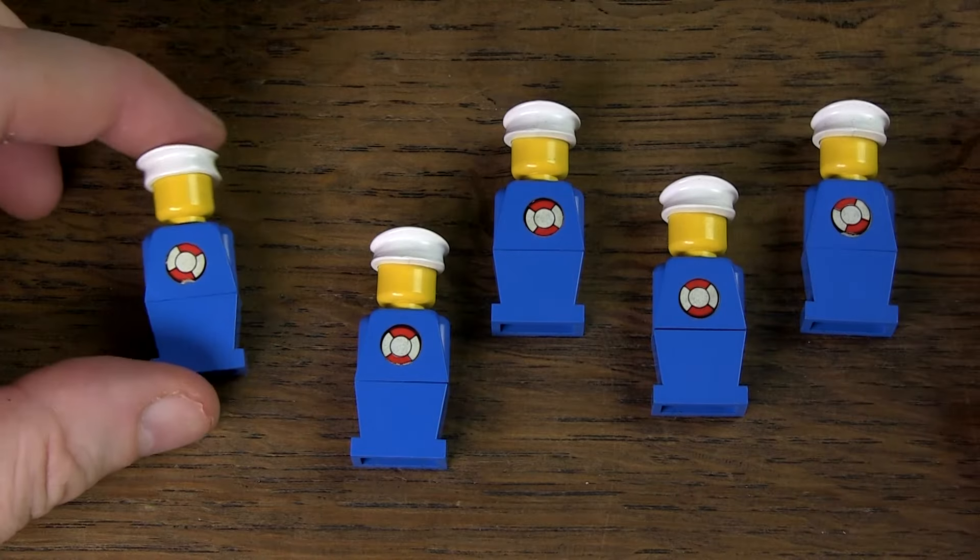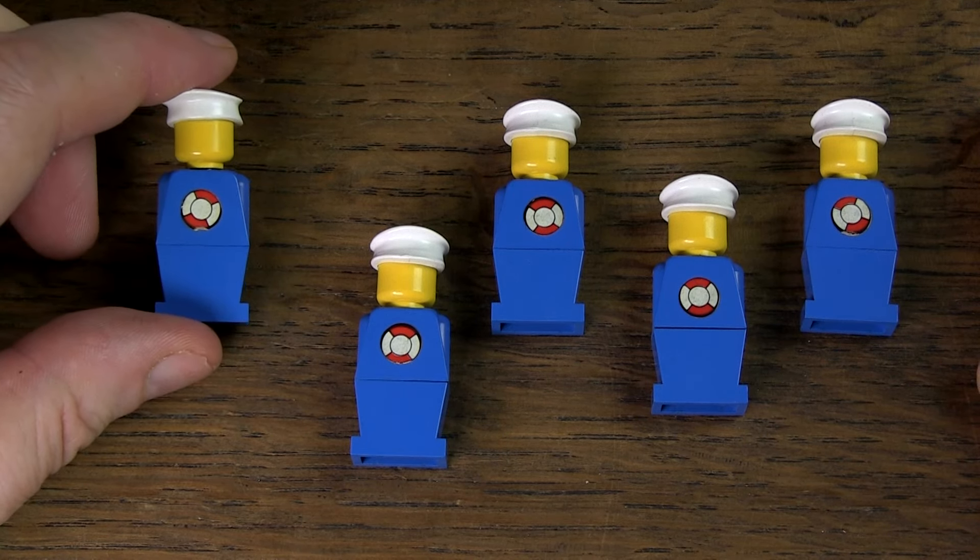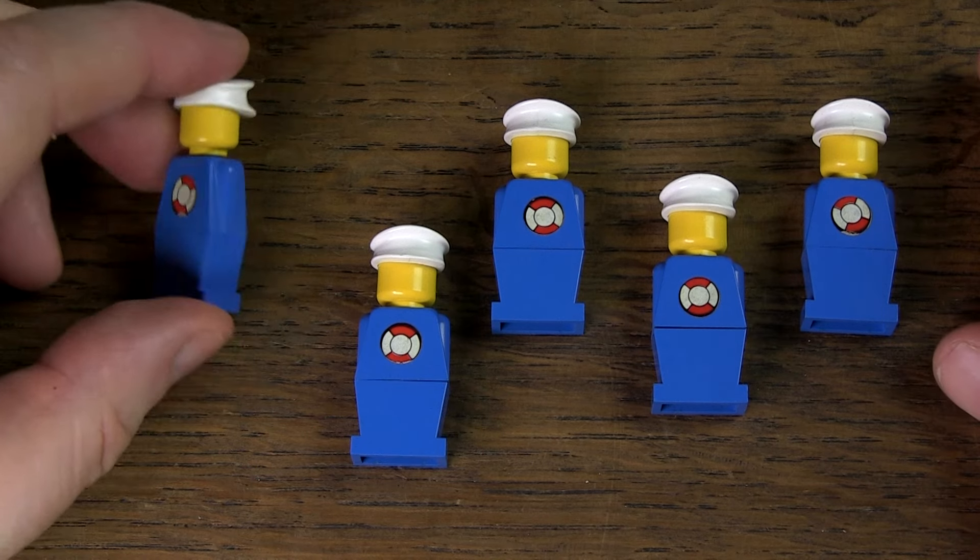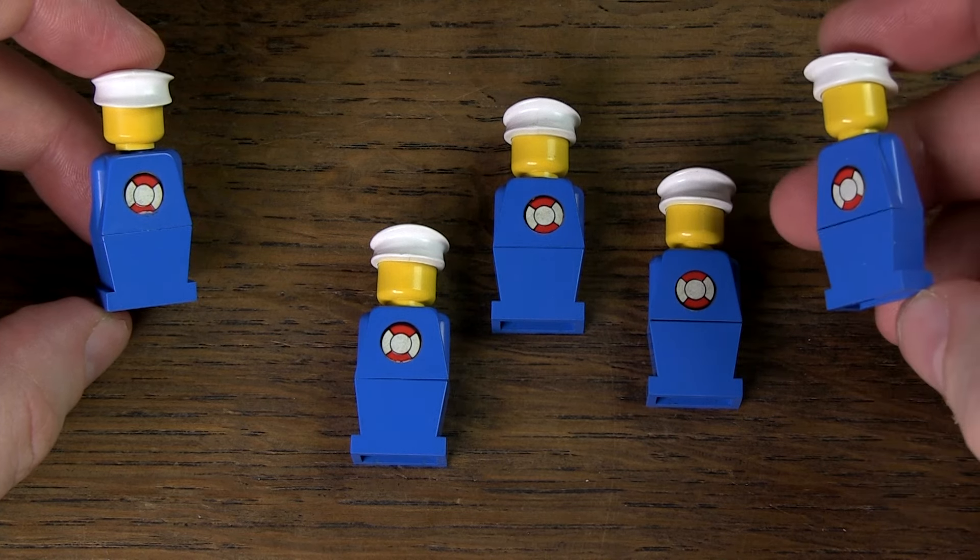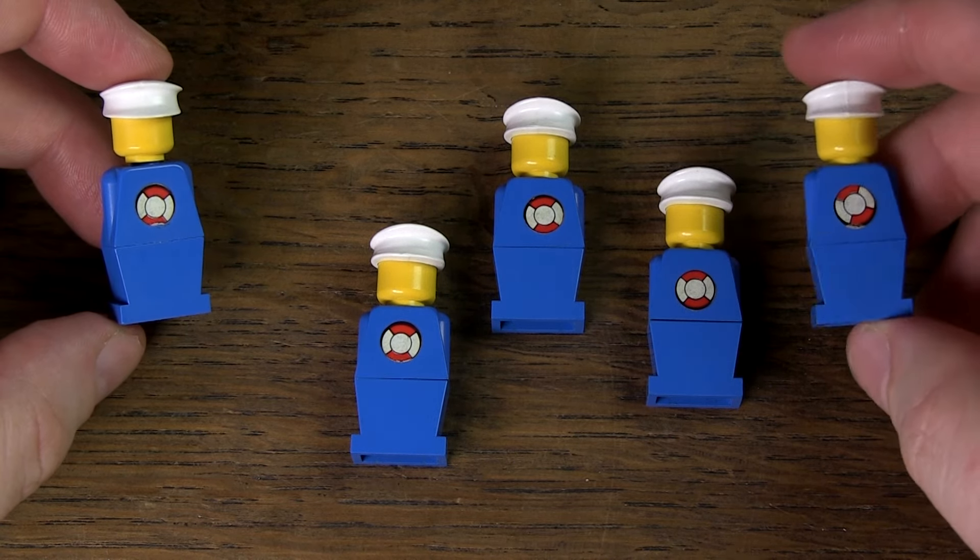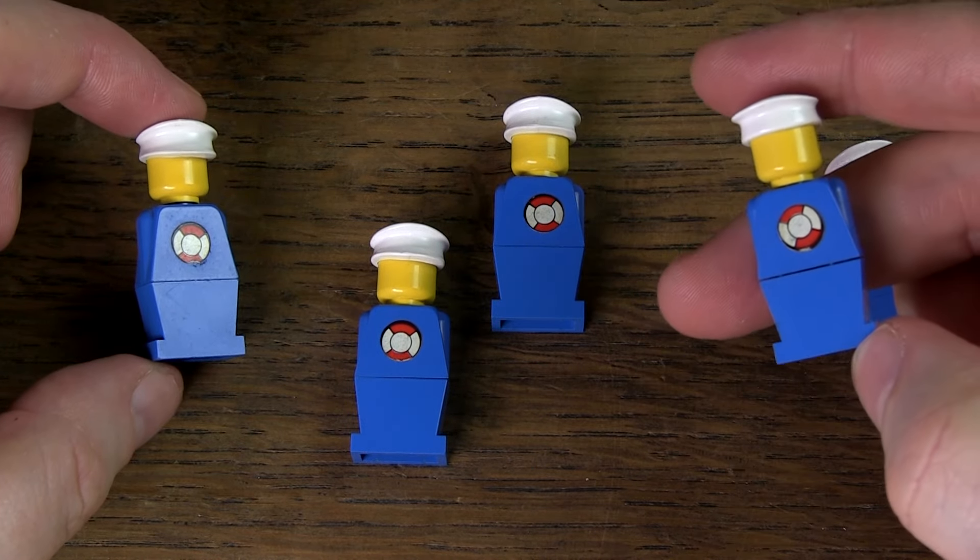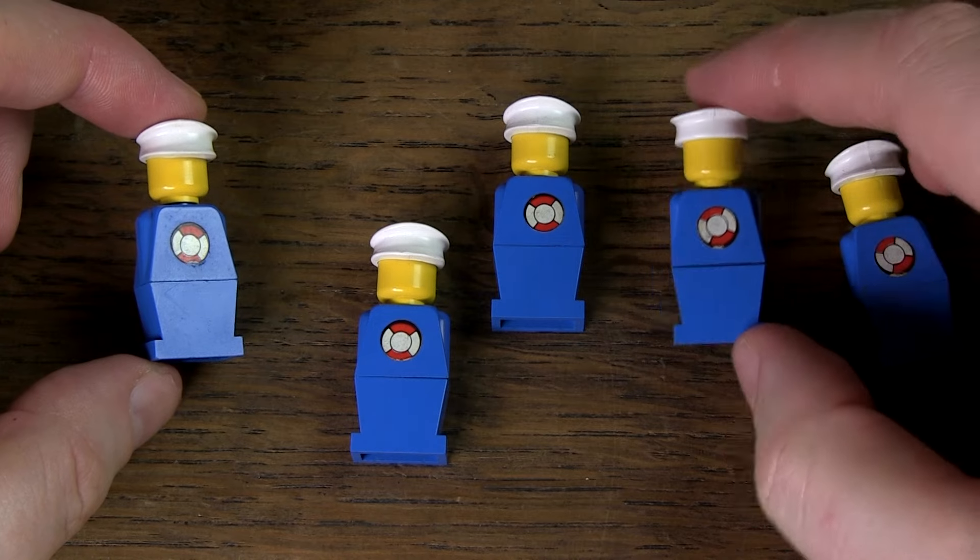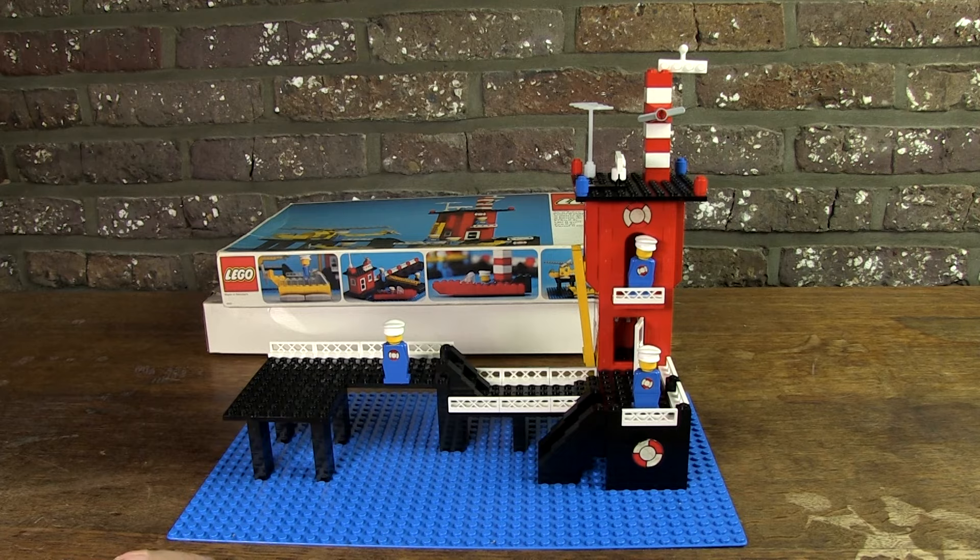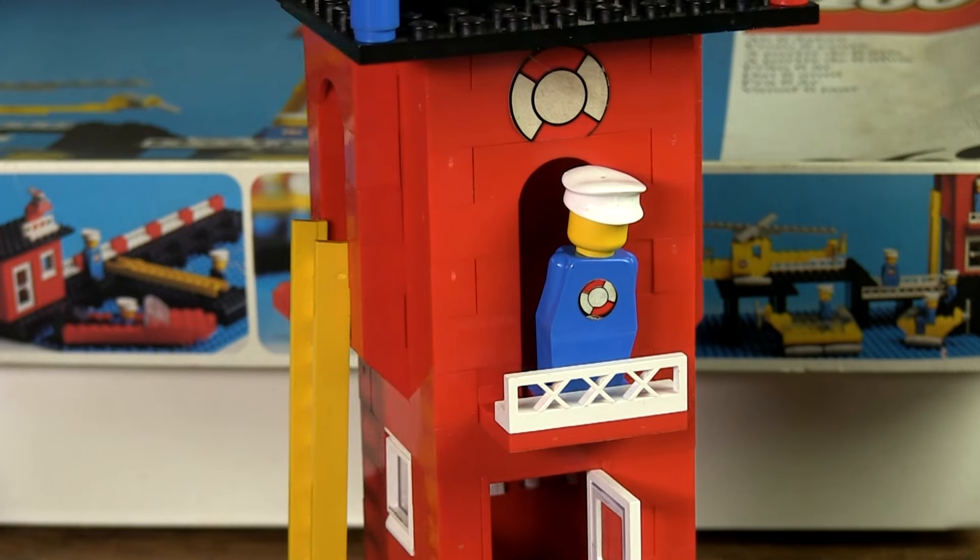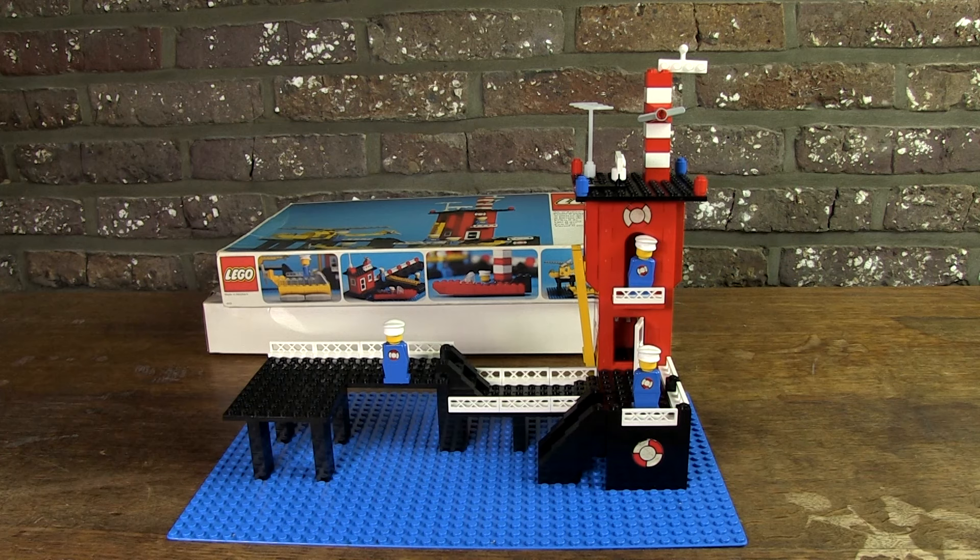And then of course the vehicles and the minifigs. Unfortunately, this set dates from the period when minifigs with limbs and facial expression were not yet produced. But these minifigs also have their charm, and I have learned to appreciate them. I have already many such old sets with these minifigs in my collection. It's very positive that there are no fewer than five minifigs in this set, with a nice sticker on the torso. But it's a pity that all five are identical. A little variation in color for the cap or the pants might have been nice.